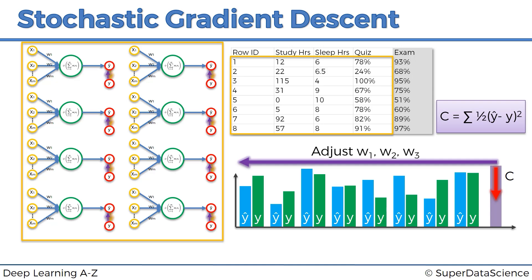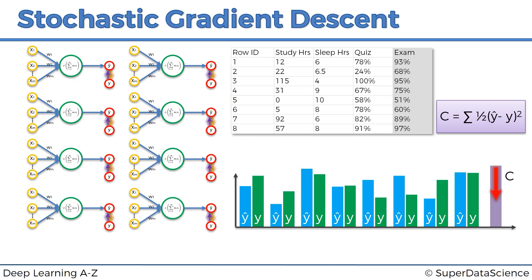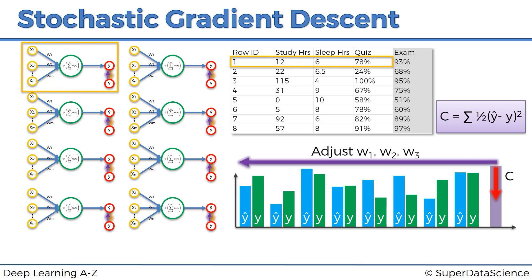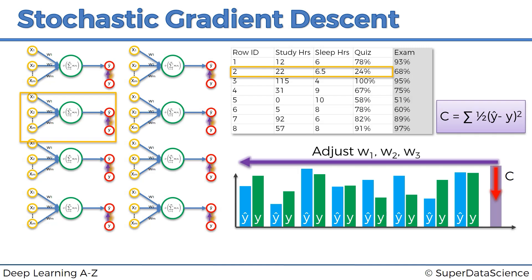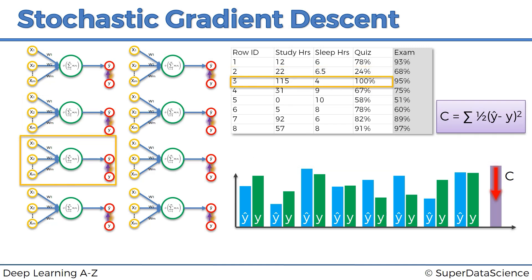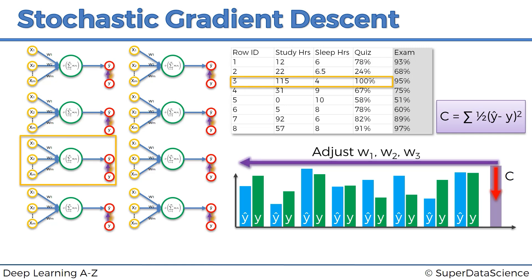The stochastic gradient descent method is a bit different. Here we take the rows one by one. We take one row, run our neural network, and then adjust the weights. Then we move on to the second row, run our neural network, look at the cost function, and adjust the weights again. Then we take the next row, run our neural network, look at the cost function, and adjust the weights. So basically we're adjusting the weights after every single row rather than doing everything together and then adjusting weights.